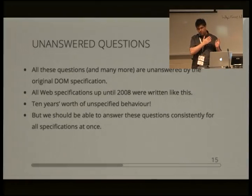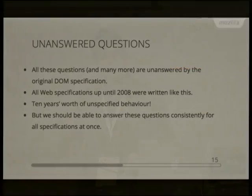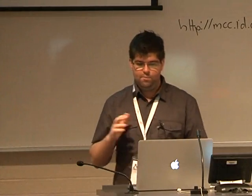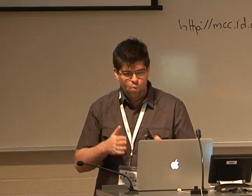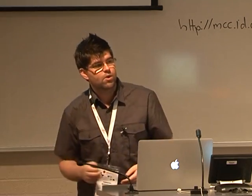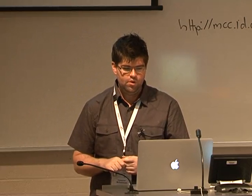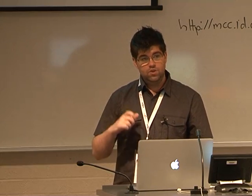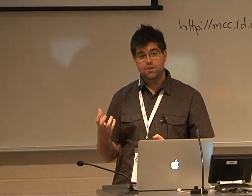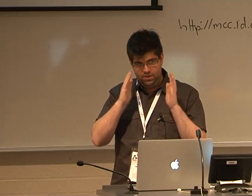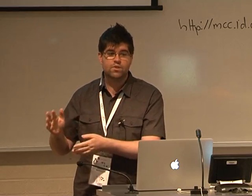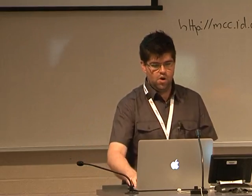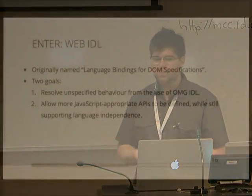All web specifications up until about 2008 were basically written this way, giving us about 10 years of unspecified behaviour that browser developers have had to reverse-engineer from each other to figure out exactly how these properties are meant to be exposed to JavaScript. But because all these specifications use an IDL language, what we should be able to do is define once what it means for an IDL fragment to map to JavaScript — and that is what we did with the Web IDL specification.